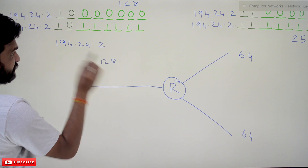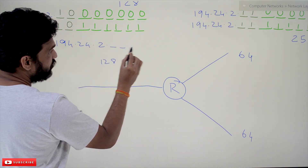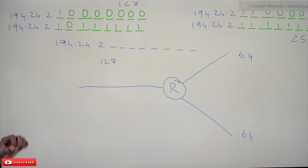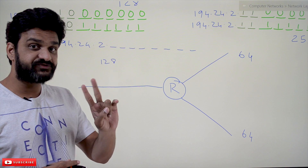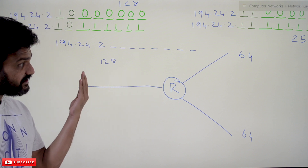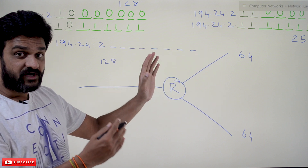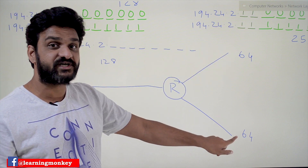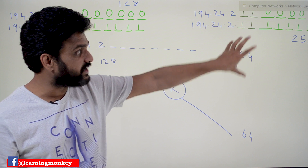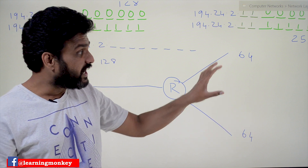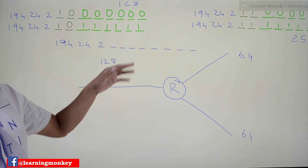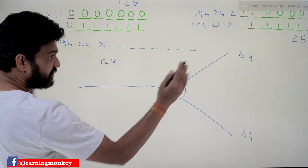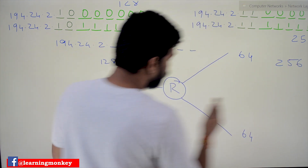The network ID of this network is 194.24.2 and the host part is 8 bits, giving 256 possibilities. Since it is a classful address, 8 bits are allocated for hosts. The division can be done in two ways: the first way is to consider the bigger network first and then divide the remaining half of IP addresses into two halves; the second way is to divide the entire 256 into 64 and 64 first and then consider the remaining network.